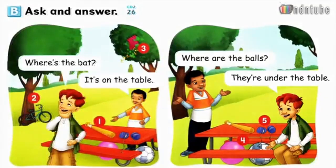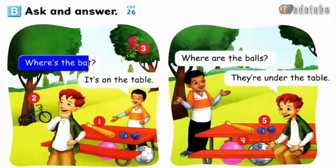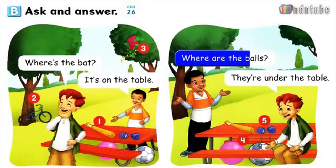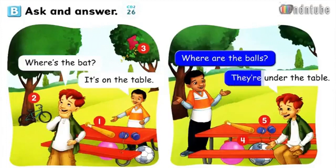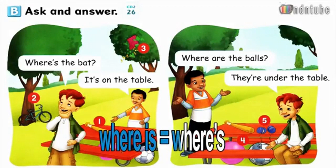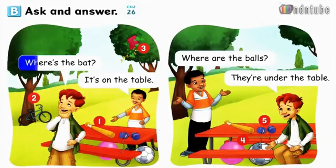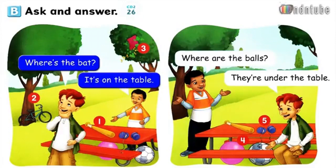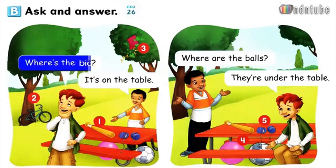Page 52. Drum track. Where's the bat? It's on the table. Where are the balls? They're under the table. Where is — Where's. Where's the bat? It's on the table. Where's the bicycle? It's by the tree.